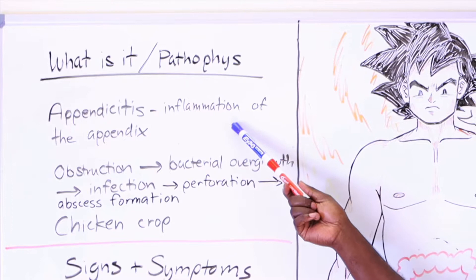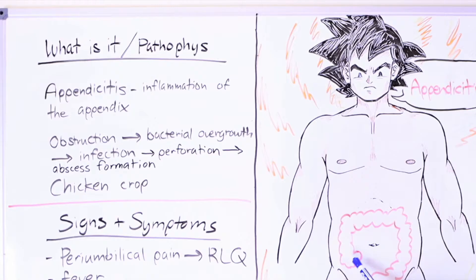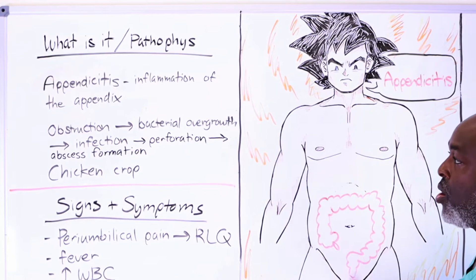Appendicitis is really just inflammation of the appendix. The appendix itself hangs around in the right lower quadrant, coming off of the colon. It's right at the junction between the small intestine and the right colon, or the ileum and the right colon — same kind of thing.